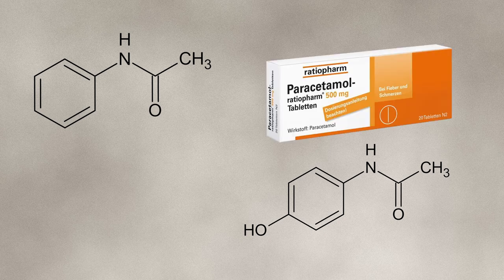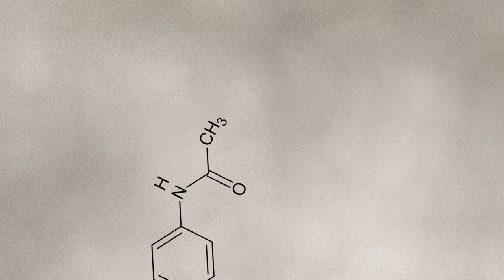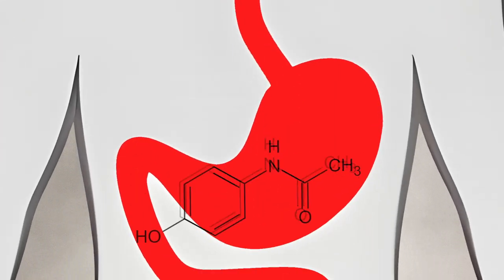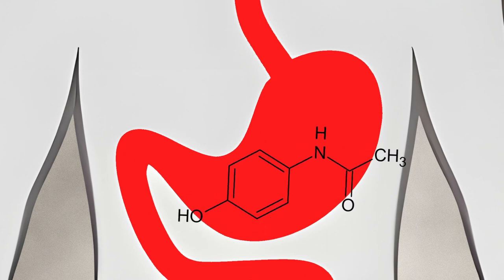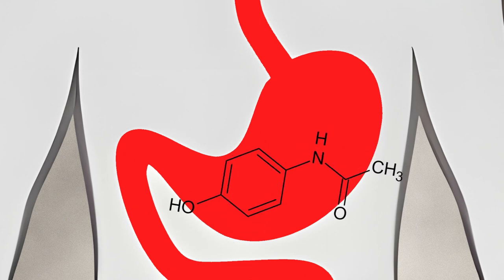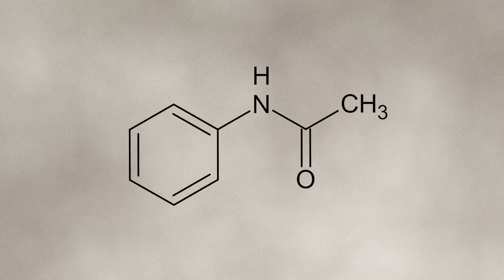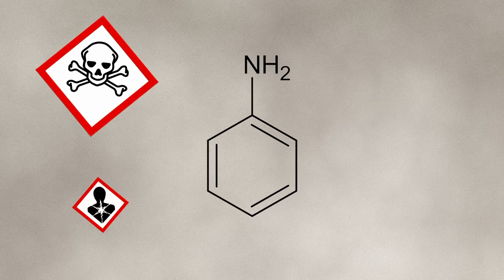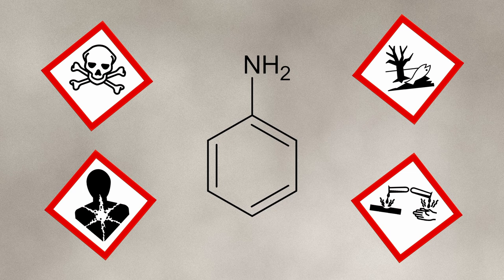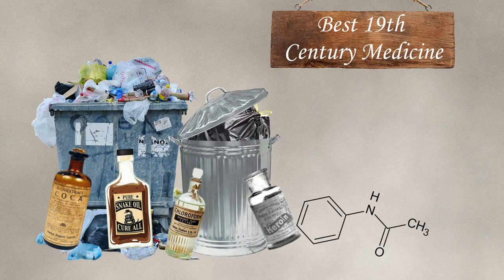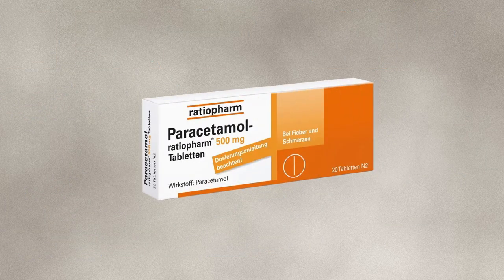The only difference is a hydroxyl group in the para position. In fact, acetanilide is metabolized into paracetamol in your body, which makes it a prodrug. It also has a pain-relieving and antipyretic effect just like paracetamol, but unfortunately it is also metabolized into aniline, which is quite toxic and causes unwanted side effects. It is therefore not used as a drug anymore and has been replaced by the much safer paracetamol.